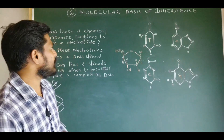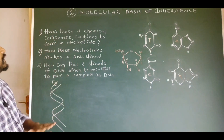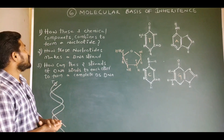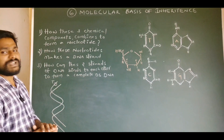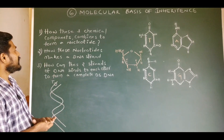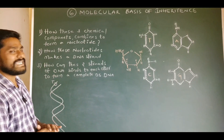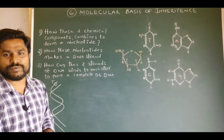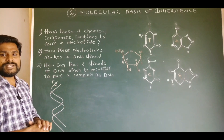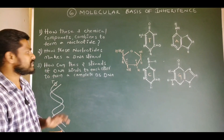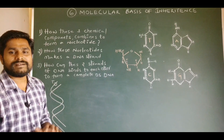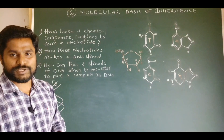Here are the questions. The first one is: how do these three chemical components combine to form a nucleotide? The second one is: how do these nucleotides make a DNA strand or a polynucleotide chain? And the third one is: how can these two strands bind to each other to form a complete double-stranded DNA molecule?